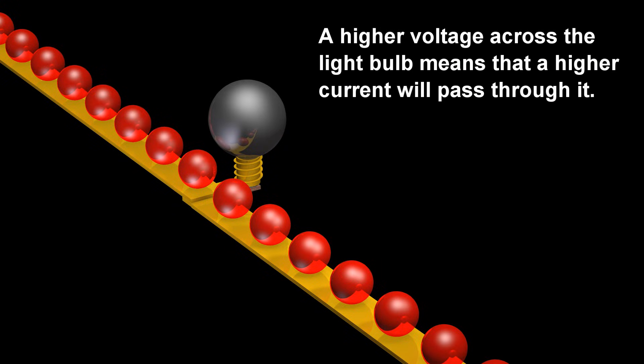A higher voltage across the light bulb means that a higher current will pass through it.